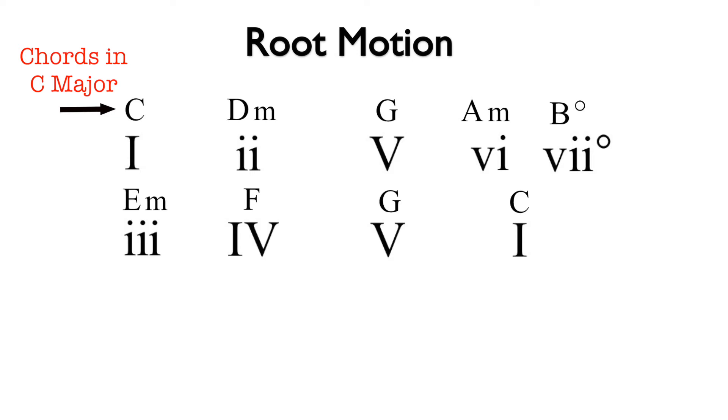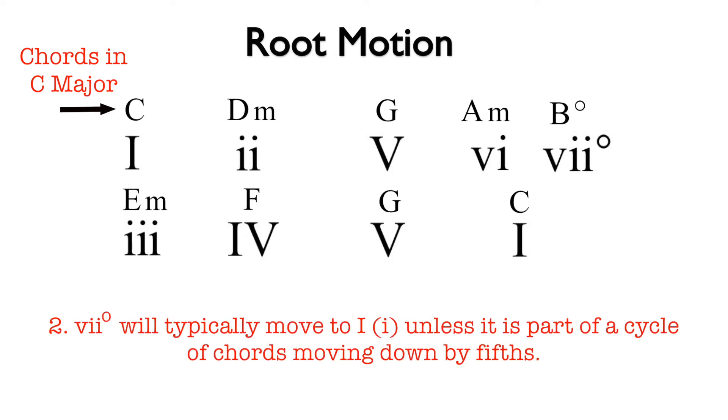However, next we have seven diminished followed by three, but seven diminished typically leads to one. We will need to modify this portion of the progression.